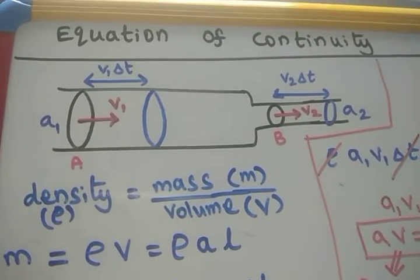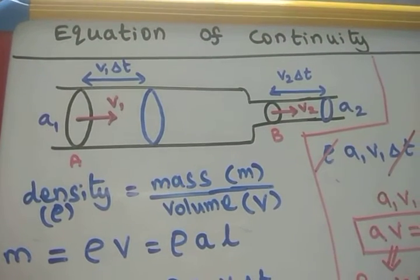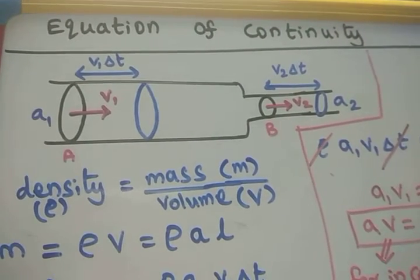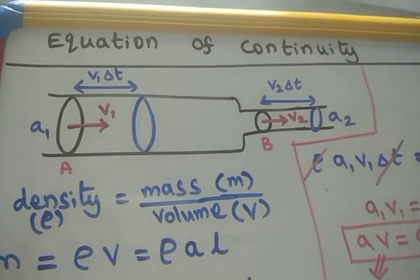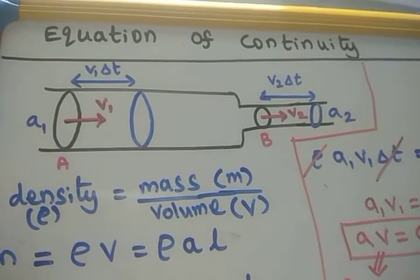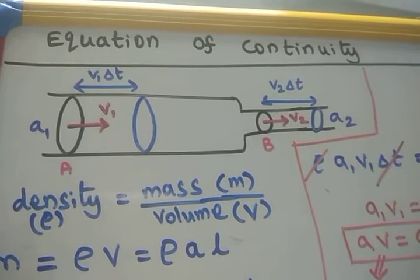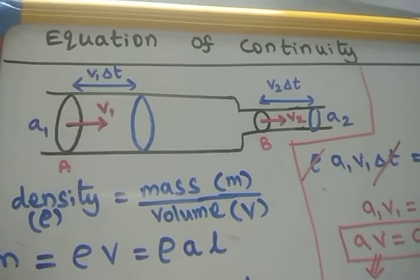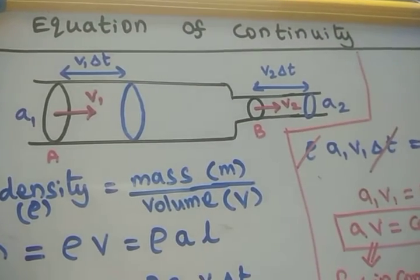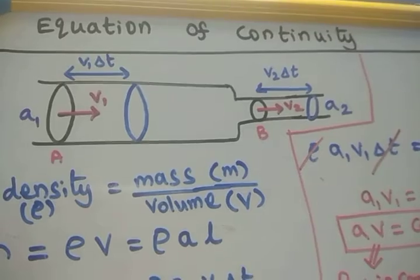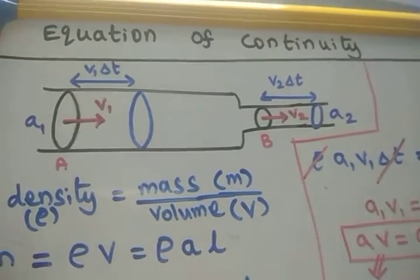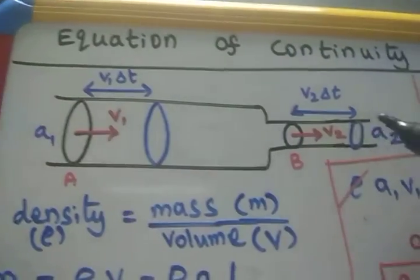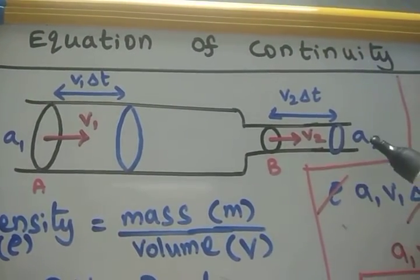Equation of continuity. This is the equation of continuity for the incompressible non-viscous fluid having a steady flow through a pipe. The pipe shows the area at point A is A1 and the area of the pipe at point B is A2.